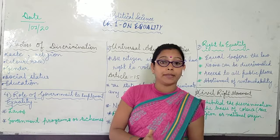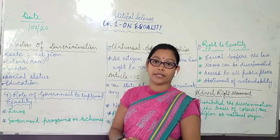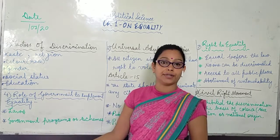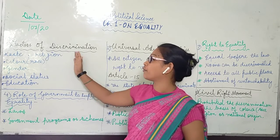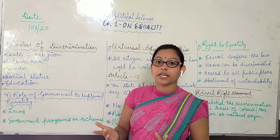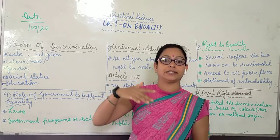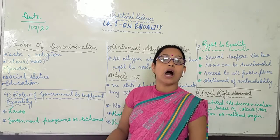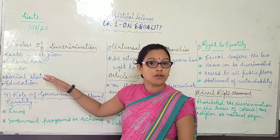The second factor is religion. Many people in India are discriminated on the basis of religion, like Hindus and Muslims. For example, if a Muslim family wants to live in a Hindu community area or buy land there, many people in that community may discriminate and say you are a Muslim and not allowed to live here. The third factor is gender. Many times people differentiate between male and female — for instance, saying women should not fly aeroplanes or be pilots, that they should only do household work. This is discrimination.